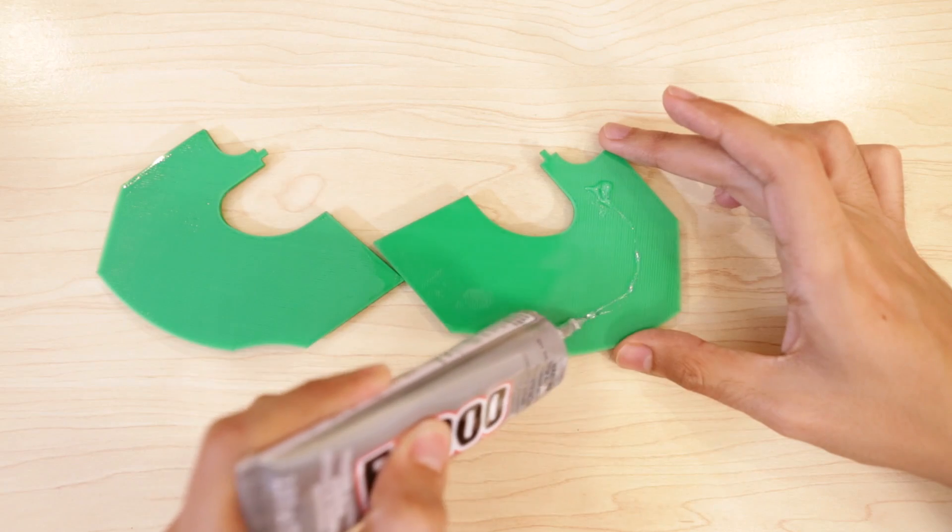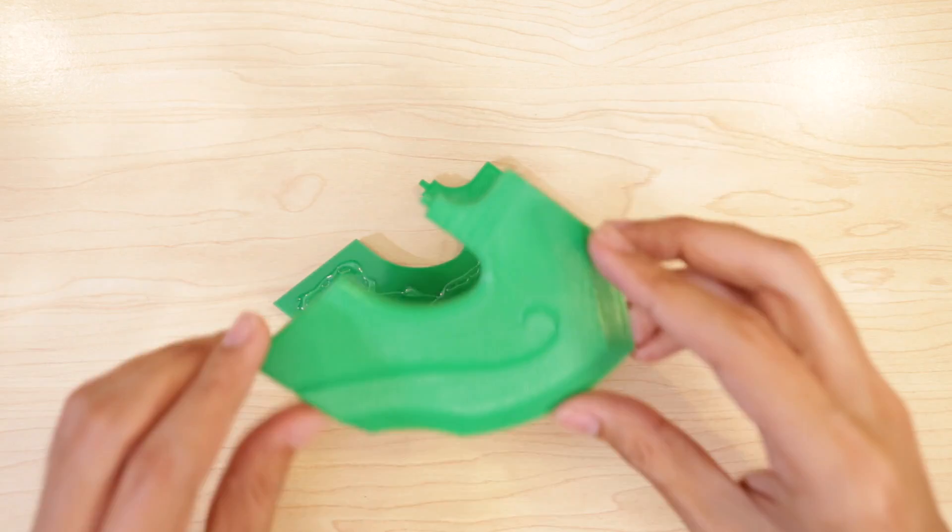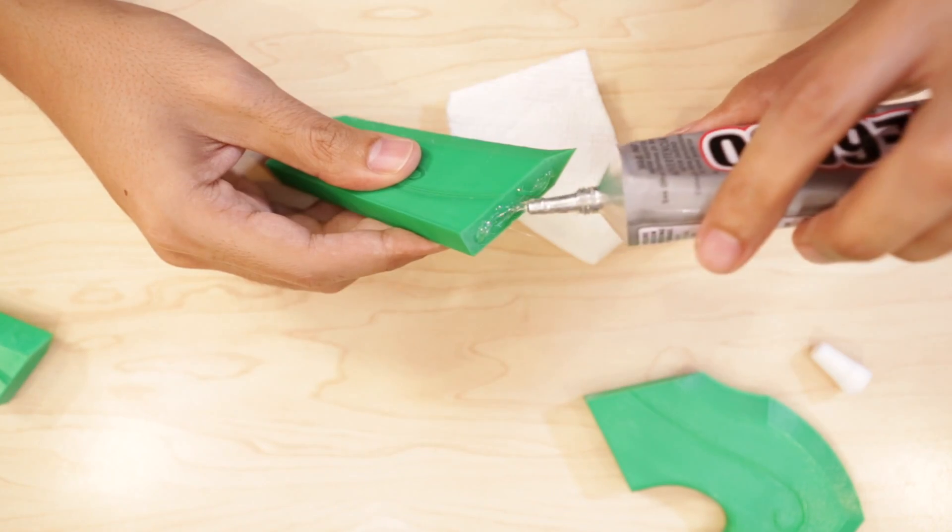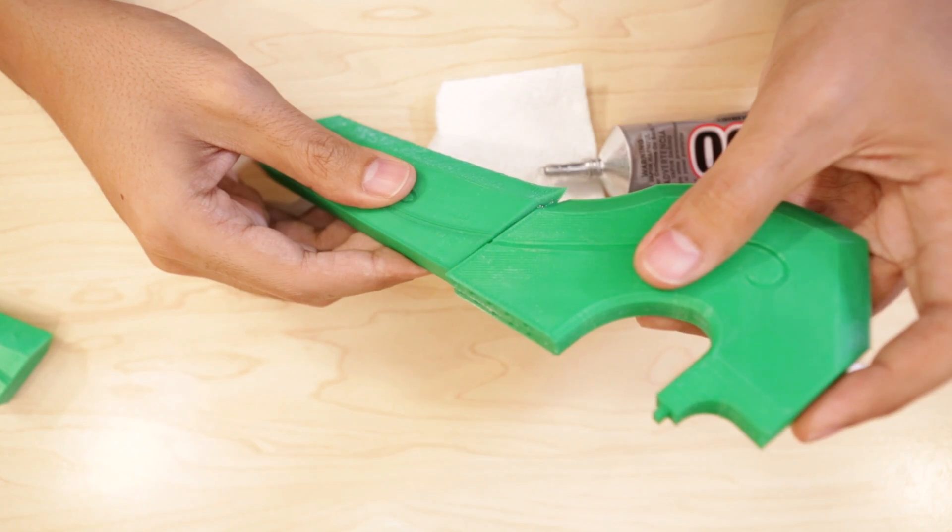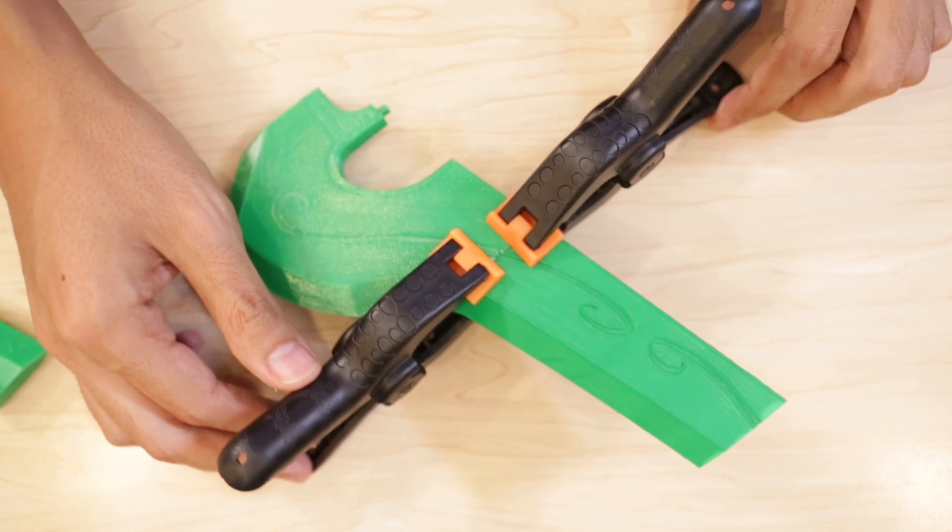I started by gluing the main pieces of the blade together using E6000, which is a silicone-based adhesive. Then I glued the middle piece of the blade onto the main base of the blade. I made sure to use clamps to hold the pieces together, and I let the E6000 cure for about an hour.